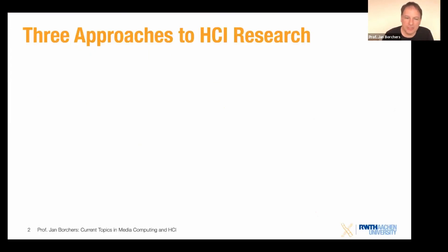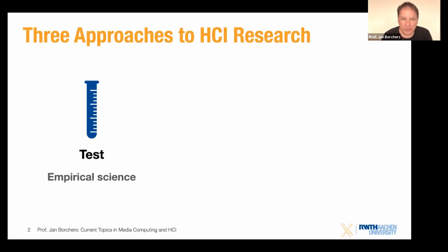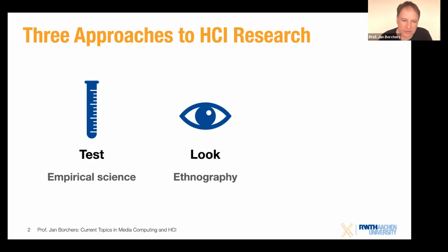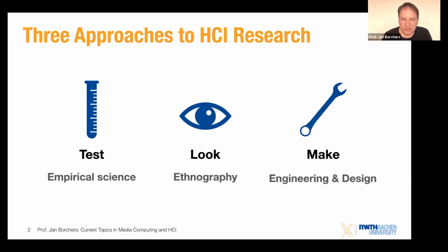As a quick reminder, we talked about three different approaches in principle and spent quite some time looking at the first one — the empirical science approach — which was all about testing a hypothesis you had in advance. Today we're going to look at the other two approaches. From a computer science HCI background, it's less frequent that we do these because we are not as trained in them, but they're equally valuable. The two we're going to look at today are ethnography and the engineering and design approach.